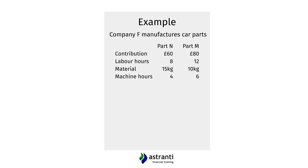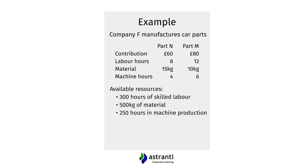What's in short supply will significantly influence our decision about how much of both products to produce. Say Company F has 300 hours of skilled labour, 500 kilograms of material, and 250 hours of machine production time. Given these limitations, is it any clearer how much of Part N and Part M we should produce? Clearly we need to strike some sort of balance, but it's not clear on what basis.